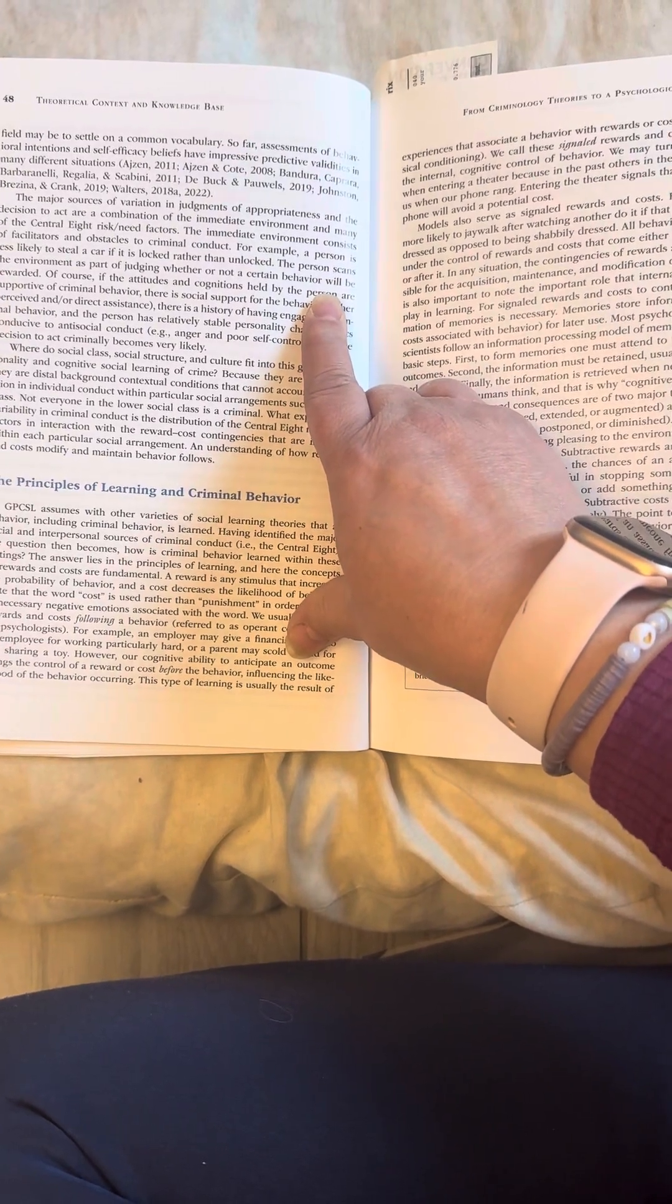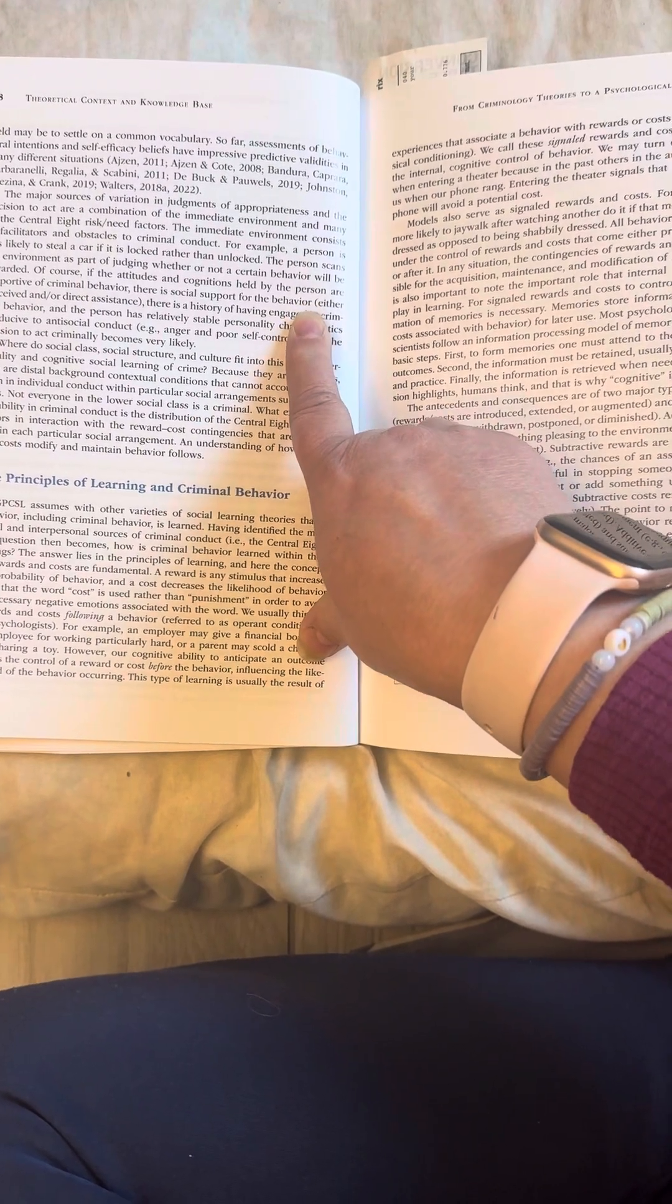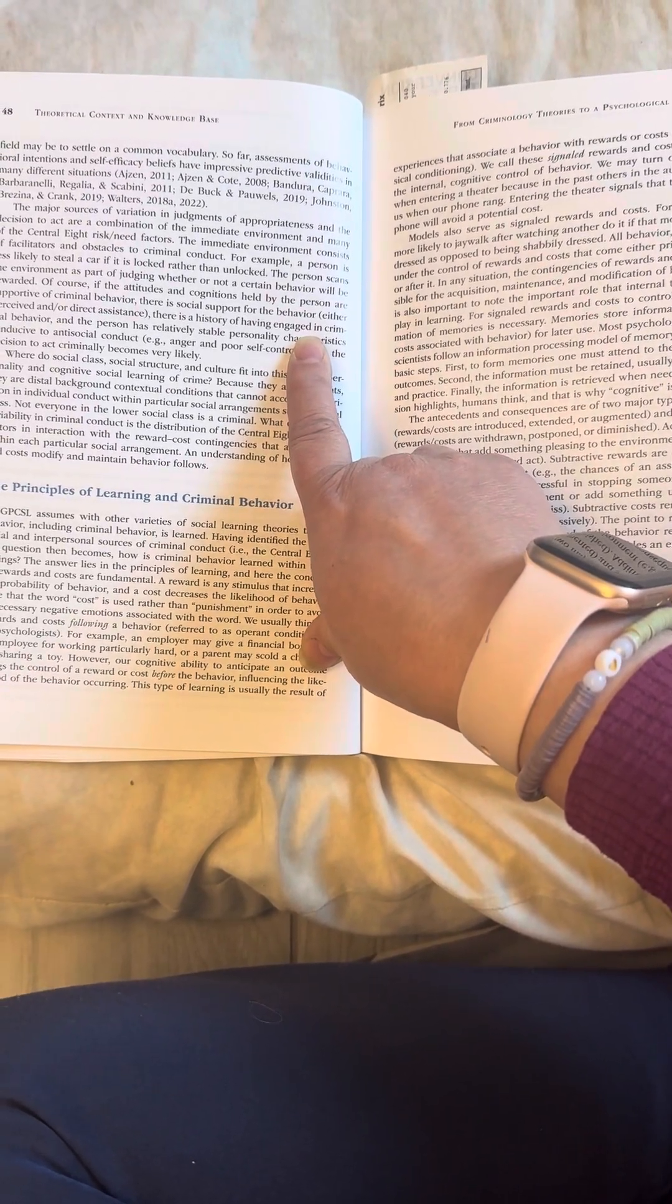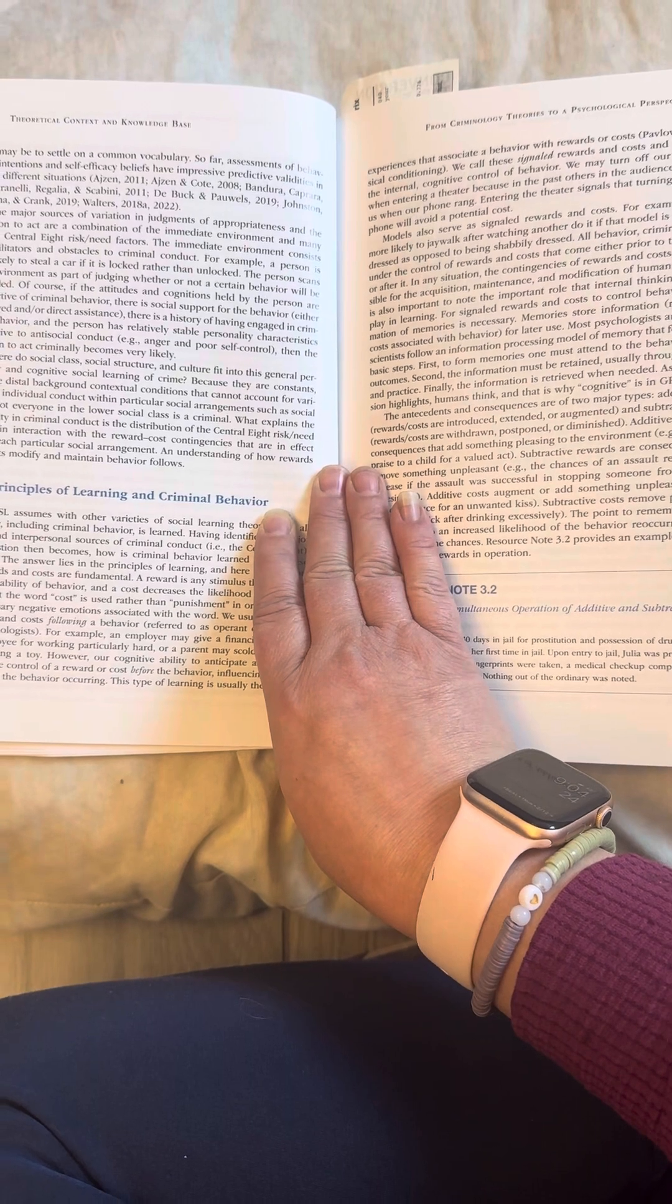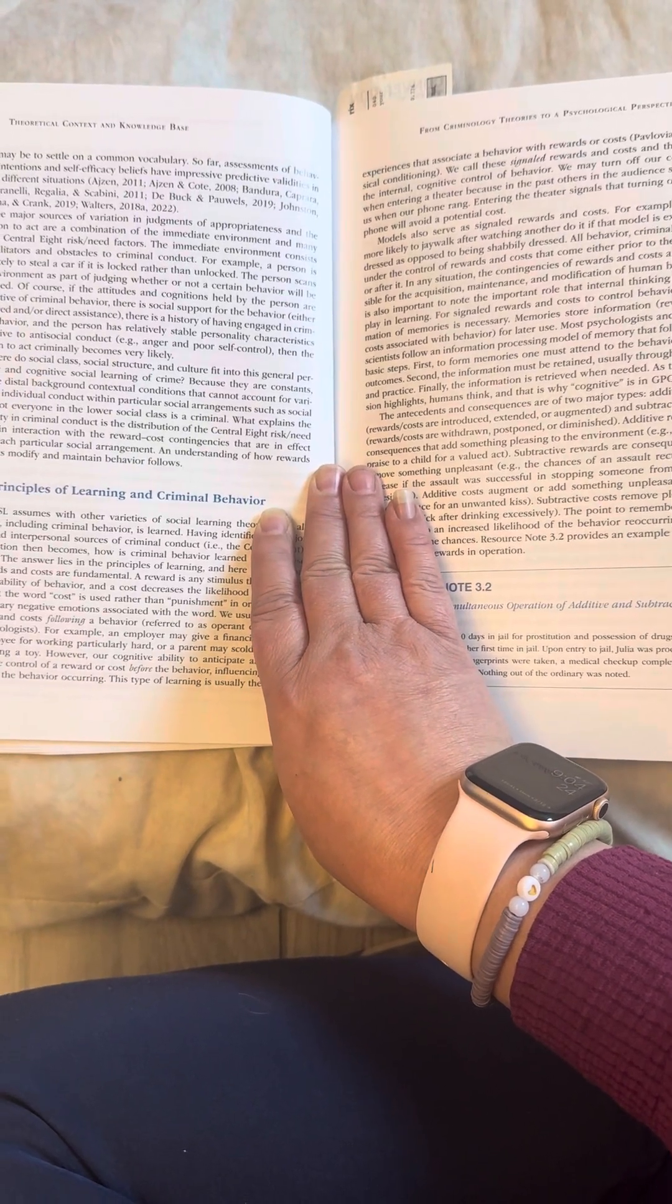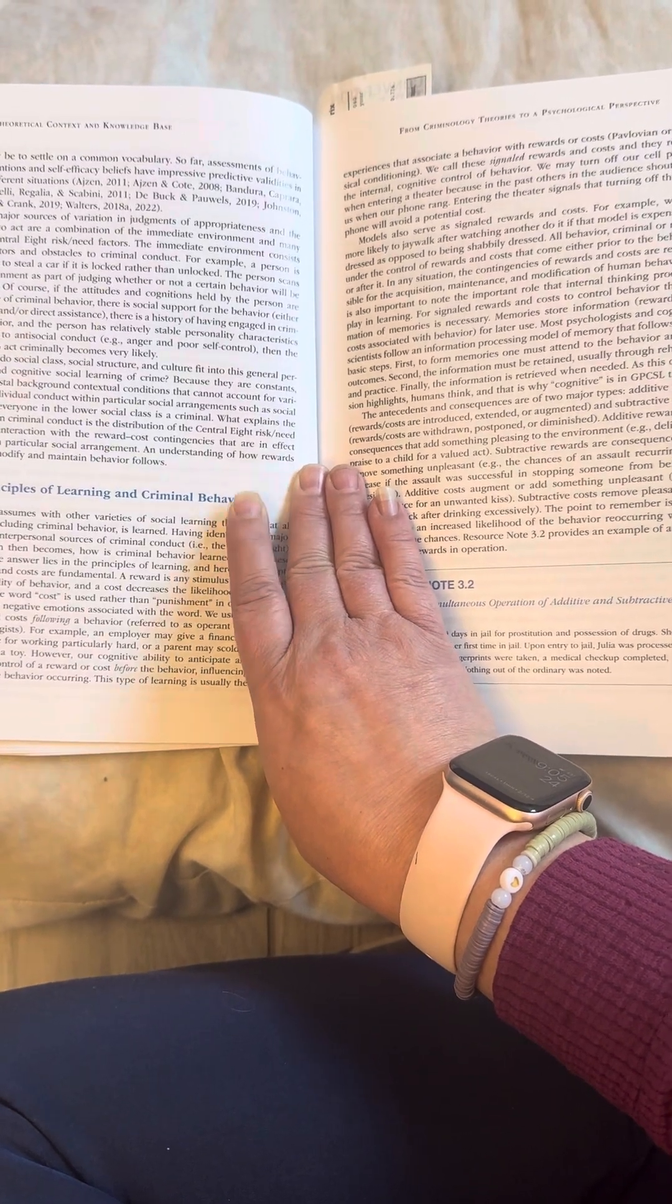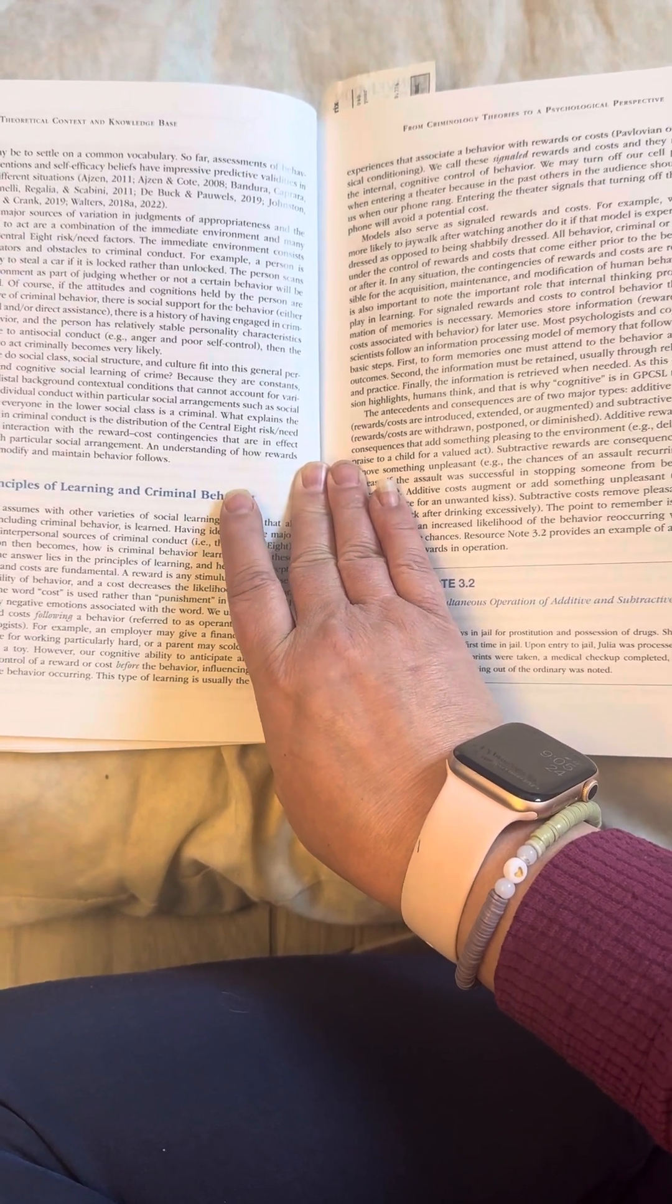The immediate environment consists of facilitators and obstacles to criminal conduct. For example, a person is less likely to steal a car if it is locked rather than unlocked. The person scans the environment as part of judging whether or not a certain behavior will be rewarded. Of course, if the attitudes and cognitions held by the person are supportive of criminal behavior, there is social support for the behavior either perceived and or direct assistance. There is a history of having engaged in criminal behavior and the person has relatively stable personality characteristics conducive to antisocial conduct. Example, anger and poor self-control. Then the decision to act criminally becomes very likely. Where do social class, social structure, and culture fit into this general personality and cognitive social learning of crime?